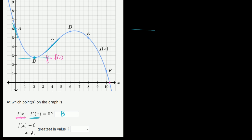And then they have this kind of crazy, wacky expression here. f(x) minus 6 over x, when is that greatest in value? We have to interpret this. We have to think about what does f(x) minus 6 over x actually mean? Whenever I see expressions like this, especially if I'm taking a differential calculus class, I would say, well, this looks kind of like finding the slope of a secant line.